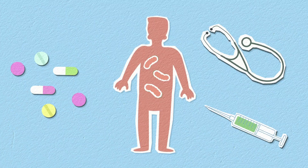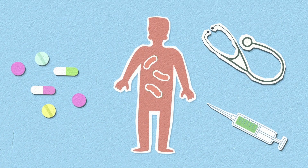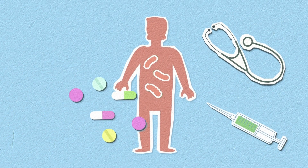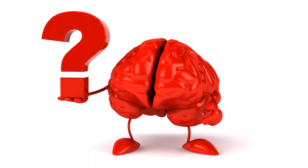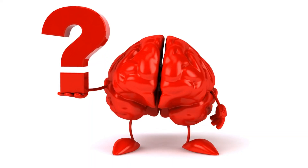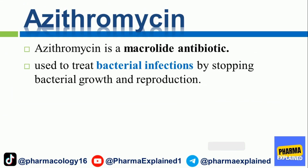Azithromycin is a widely used antibiotic known for its simplicity and effectiveness. But how does it work, and what are the do's and don'ts while taking it? Let's explore this essential medication. Azithromycin is a macrolide antibiotic used to treat bacterial infections by stopping bacterial growth and reproduction.